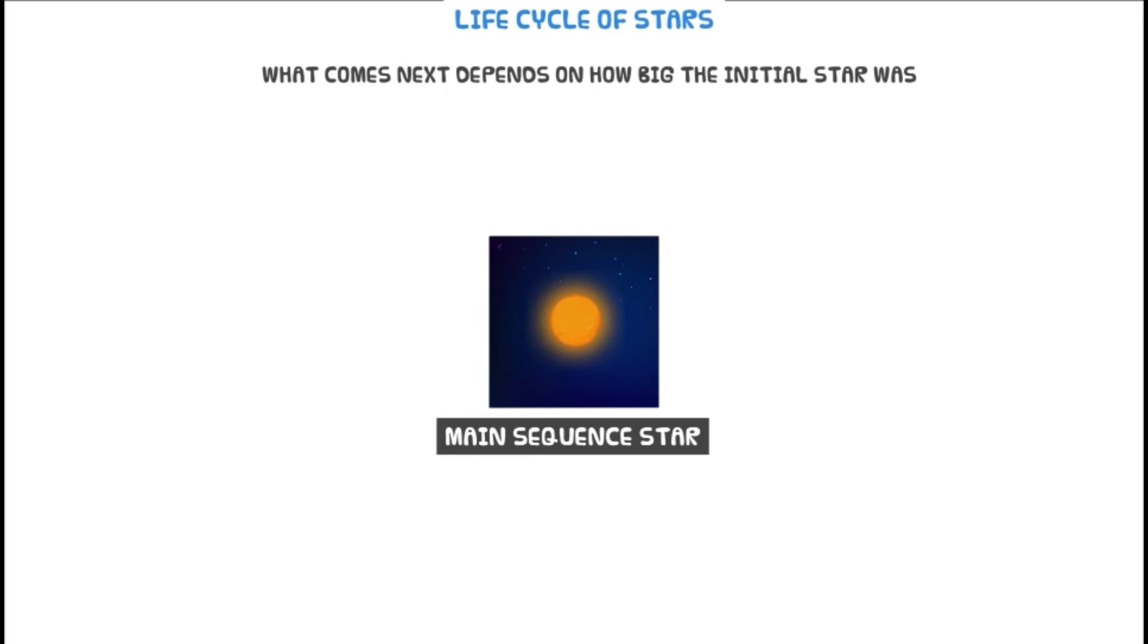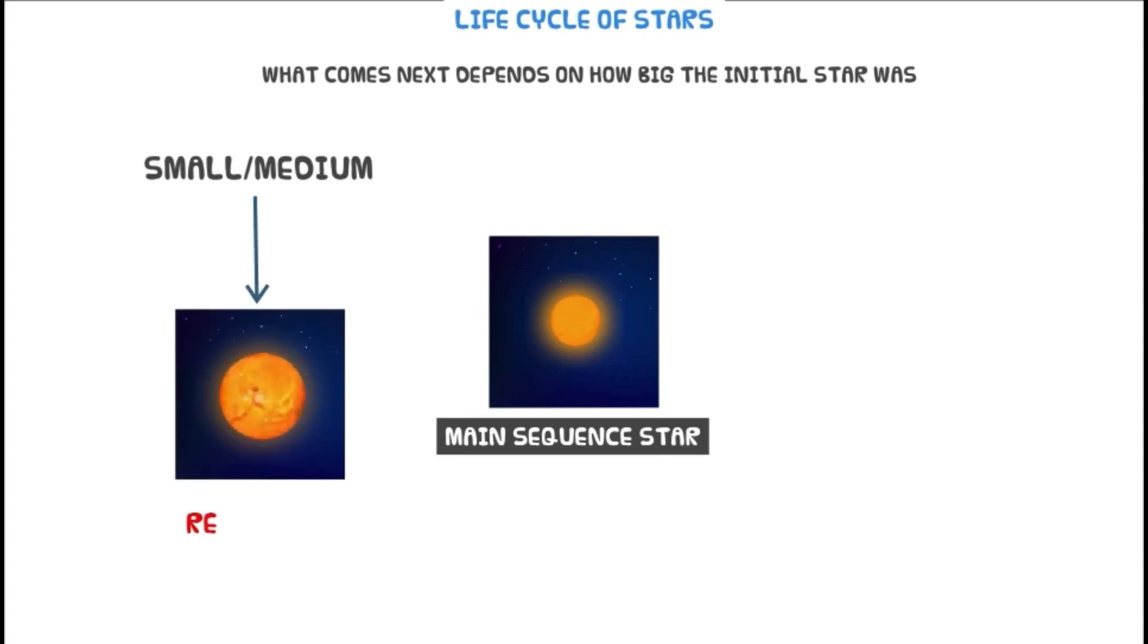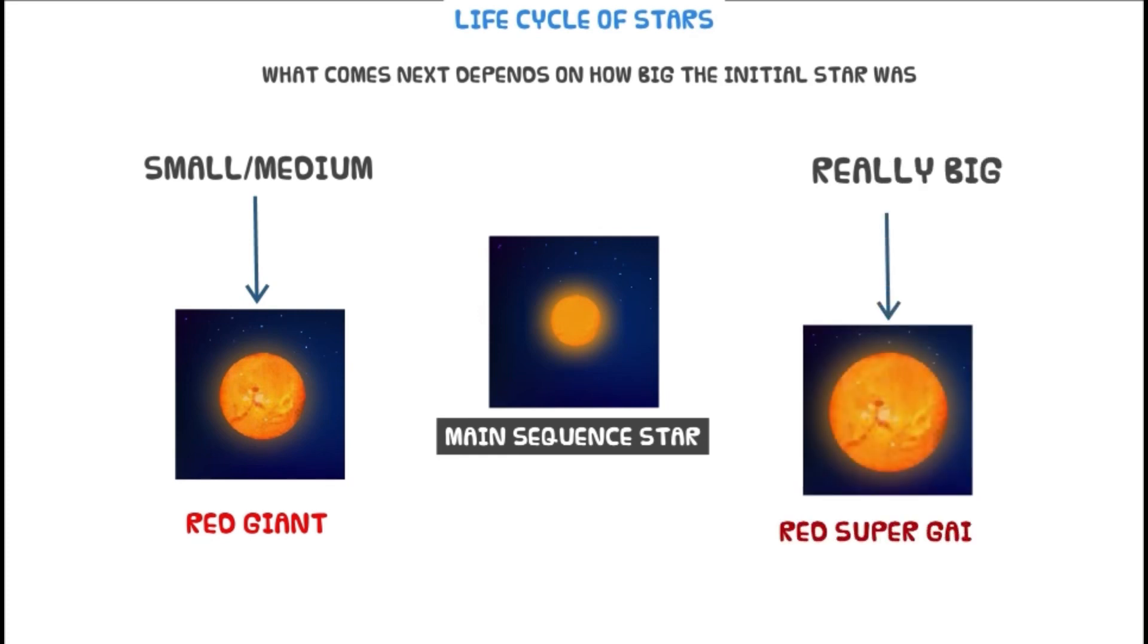What comes next depends upon the size of a star. If the star is very small in size, it will cause a red giant to be formed, and if the star is really big, it will cause a red supergiant to be formed. From here, the stars complete their life cycle in very different ways.